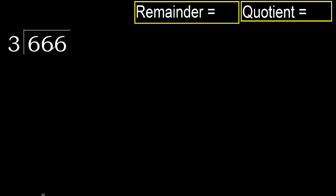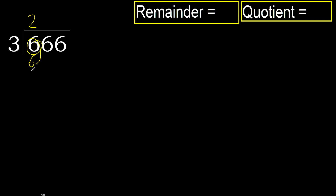666 divided by 3. 6 is not less, therefore work with 6. 3 multiplied by which number is nearest to 6 but not greater? 3 multiplied by 3 is 9 — 9 is greater. Multiplied by 2: 6 is not greater. Ok, subtract 6 minus 6 equals 0.